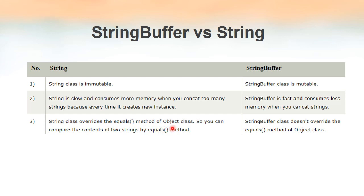The String class overrides the equals method of the Object class. Object class is the parent class of all classes in Java, and inside it we have a method named equals. Since String class is the child class of Object class, it has its own implementation of the equals method. But StringBuffer does not override the equals method of the Object class — even though StringBuffer is the child class of Object class, it does not specifically write any equals method inside.